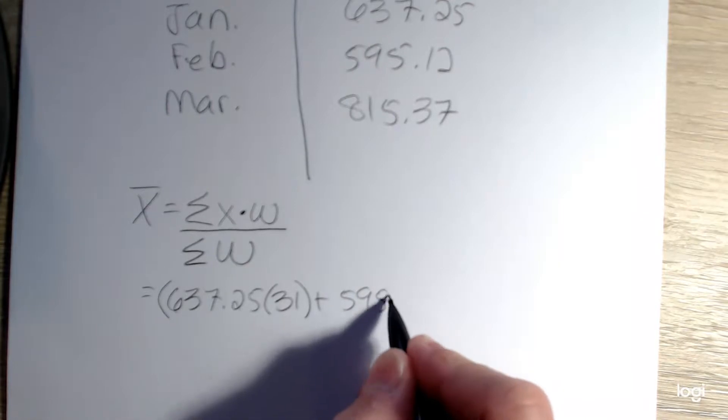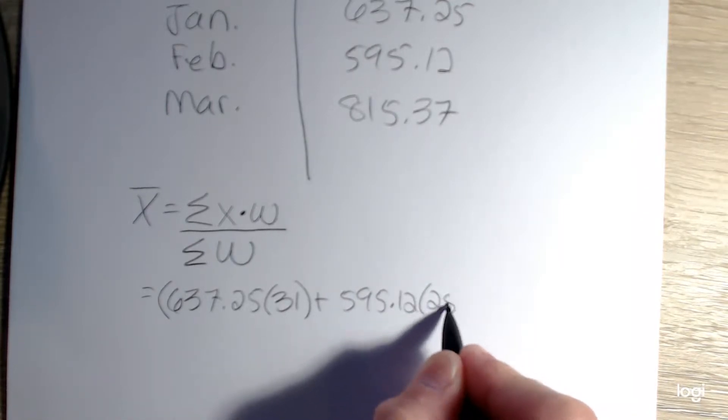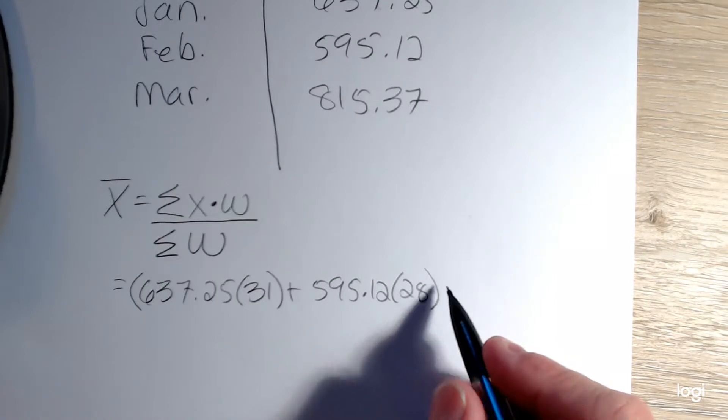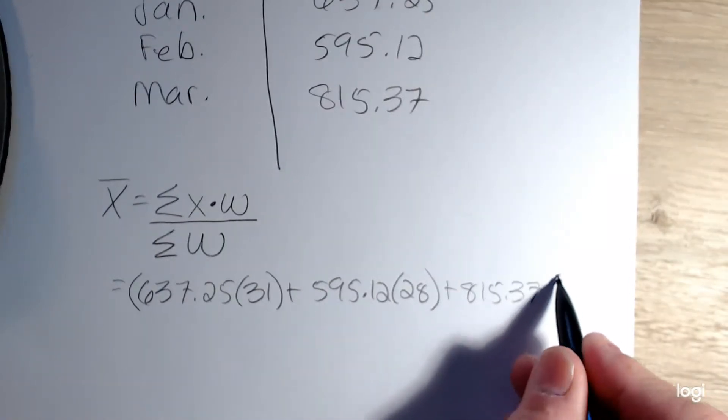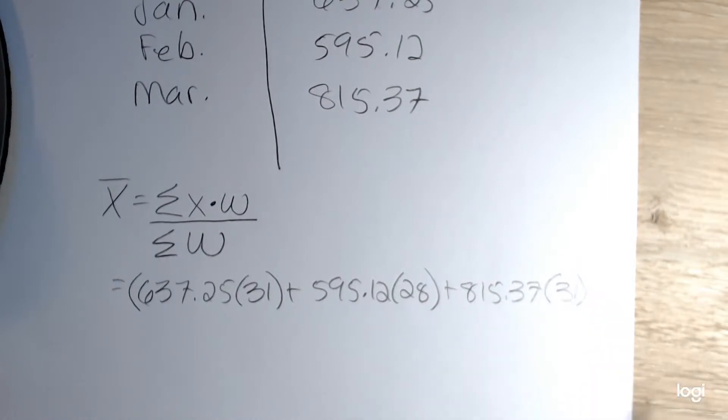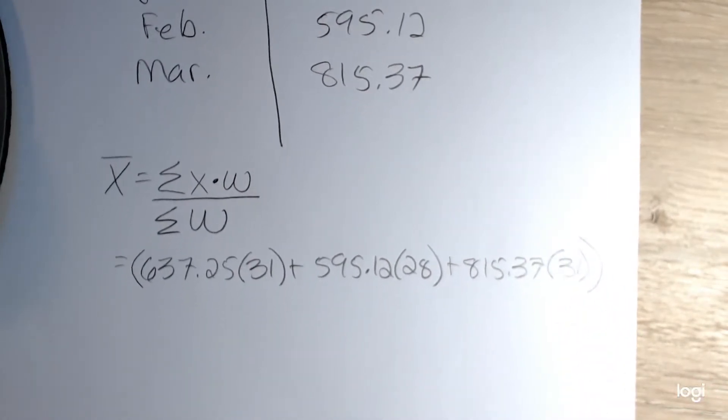plus 595.12 times 28, and I'm assuming this is not a leap year, plus 815.37 times 31, because March has 31 days, and then I'm going to close that outer set of parentheses.